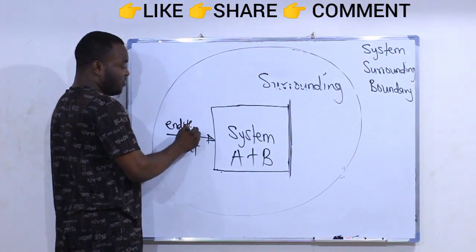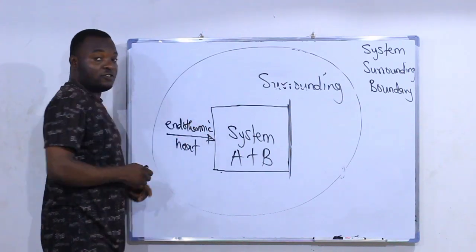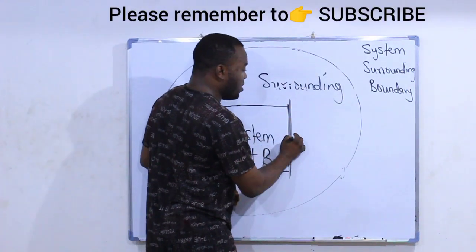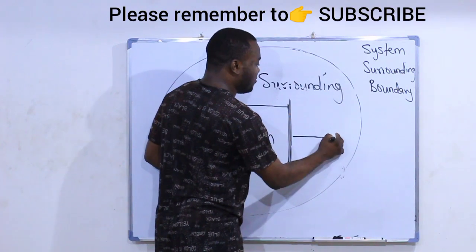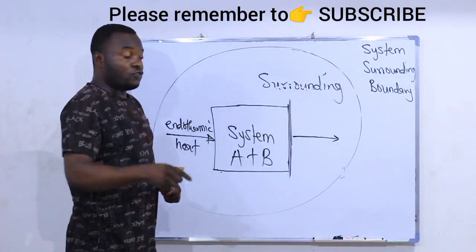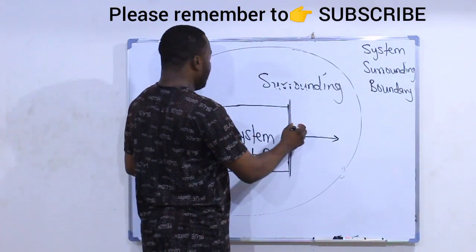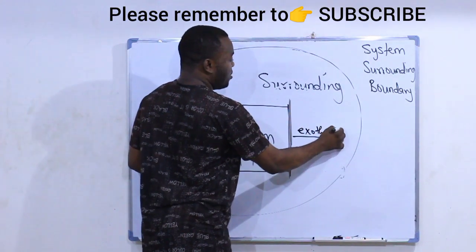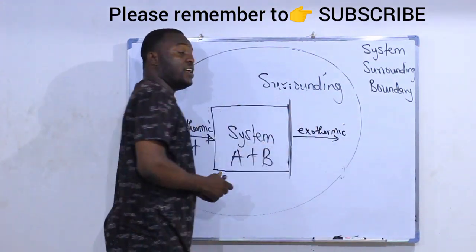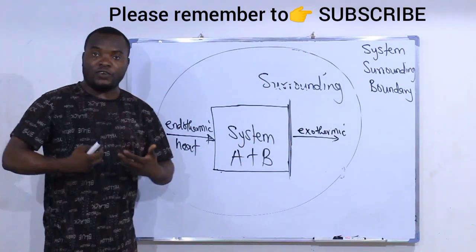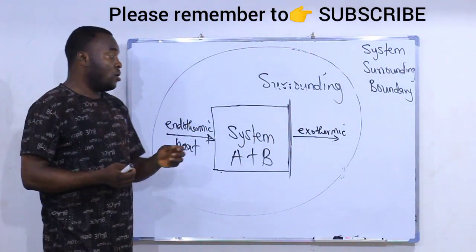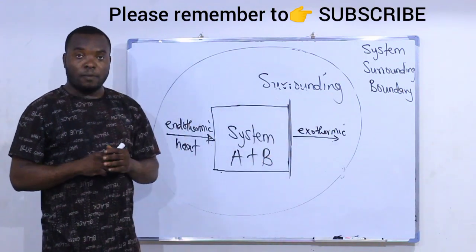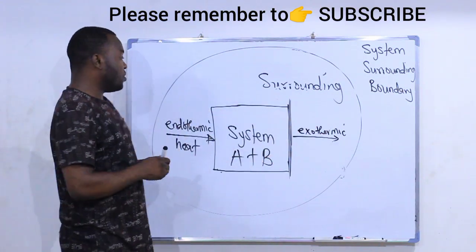Endothermic means the gain of heat by the system, while exothermic means the loss of heat by the system.